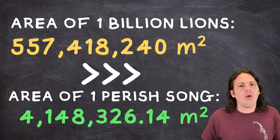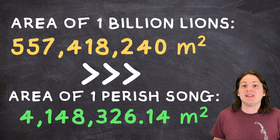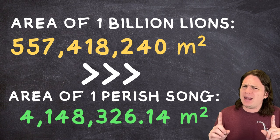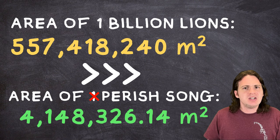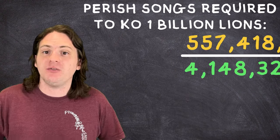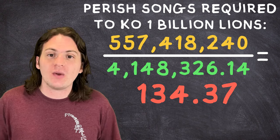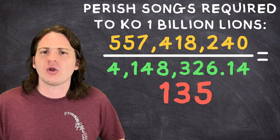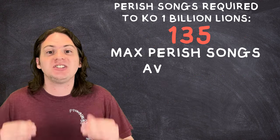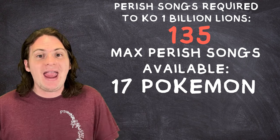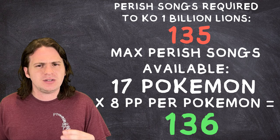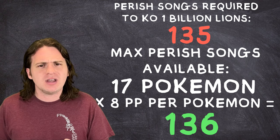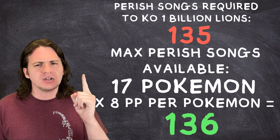So there you have it. A simple Perish Song is physically incapable of affecting all 1 billion lions at once. But then again, Pokémon don't need to use just one Perish Song. They could theoretically fire off a whole bunch of Perish Songs to cover more ground. Assuming that the maximum number of lions were perfectly packed within the area of each Perish Song, using some simple division, we can find that you would need 134.37 Perish Songs to KO all 1 billion lions. 135, since there's no half PP in Pokémon. There are 17 Pokémon that can learn Perish Song naturally. At a maximum of 8 PP per Perish Song, that means that the Pokémon can use Perish Song a grand total of 136 times. Enough to cover all 1 billion lions, with exactly one Perish Song left over.